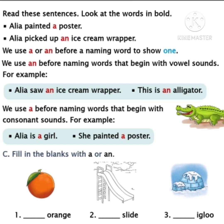Now I am reading the next sentences. Put your finger. Listen carefully, children. We use A before naming words that begin with consonant sounds. For example, in the blue colored box: Aaliyah is a girl. The word girl starts with G, and G is a consonant, so we must write A girl. Next sentence: She painted a poster. The word poster starts with P. P is a consonant, so we must use A poster.